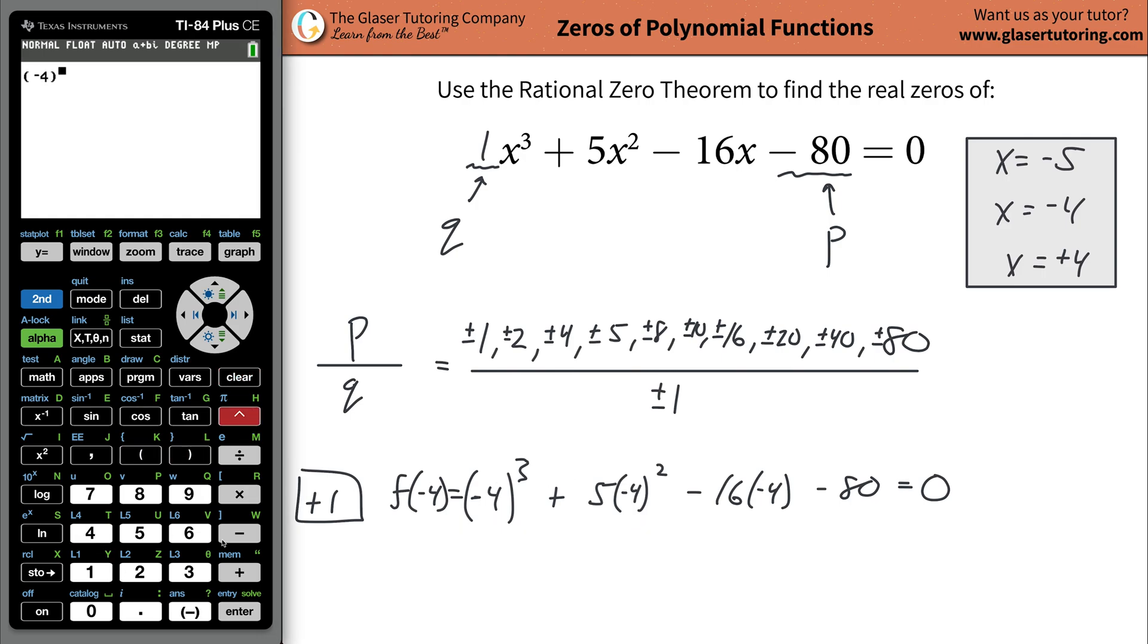So parentheses negative four cube that, and then plus five parentheses negative four squared, then minus 16 parentheses negative four, and then minus 80. And voila, it does equal zero. So once we substitute in the value of negative four and we get basically a remainder of zero, we then know that whatever number we plugged in here, which was negative four is going to be a zero of the function. So x should be equal to negative four, which it was.